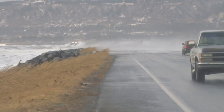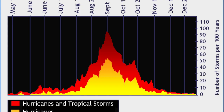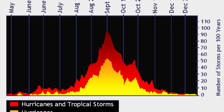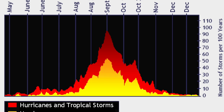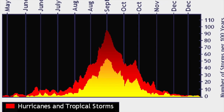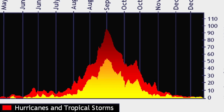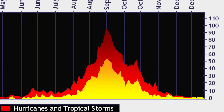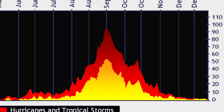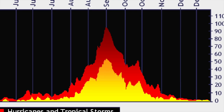So when does hurricane season start? The Atlantic hurricane season is from June 1st to November 30th, but most hurricanes occur during the fall months. The eastern Pacific hurricane season is from May 15th to November 30th.